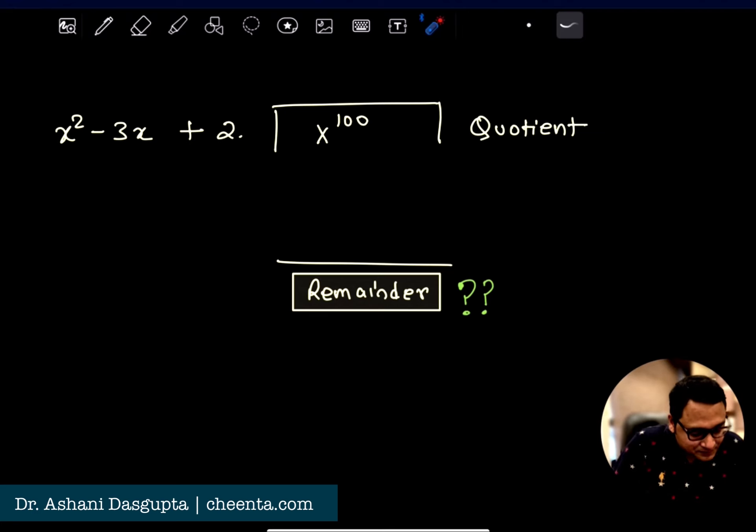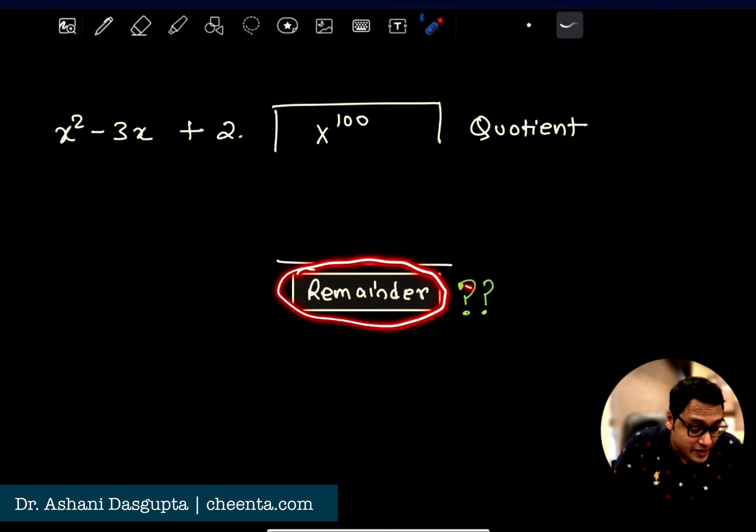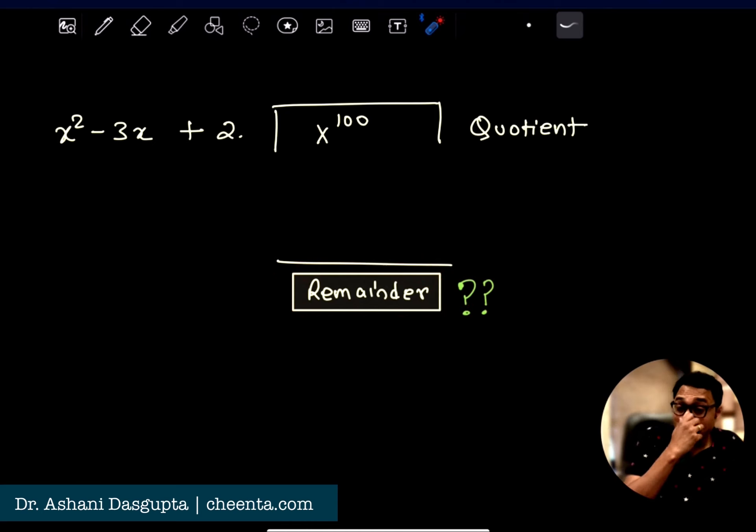It says that if you divide x to the power 100 by x squared minus 3x plus 2, what is the remainder of this division? We will be using something called the remainder theorem to solve this problem. It's a very standard but beautiful problem in algebra. It's also useful for mathematical olympiads such as American Math Competition and IUQR.